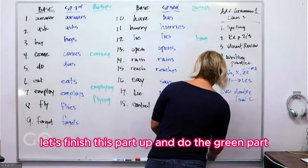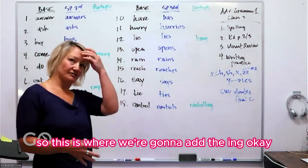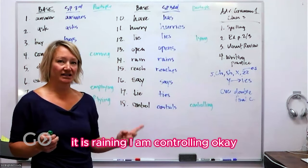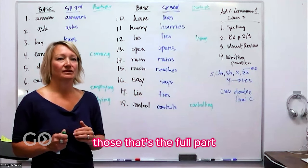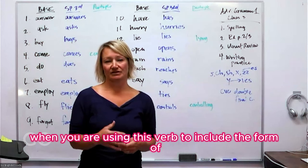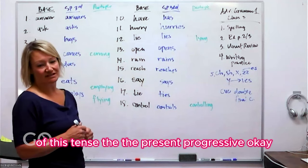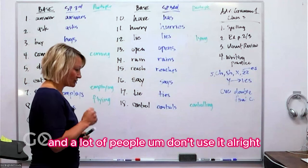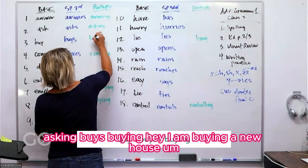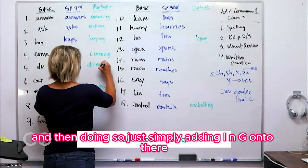Now let's finish with the green marker and do the participle — the I-N-G form. Remember, the full verb includes the form of 'to be': 'is coming,' 'it is raining,' 'I am controlling.' That's why this is just the participle. Don't forget to include the form of 'to be' when using this tense — the present progressive — it's a critical part and a lot of people omit it. So: 'answer' → 'answering,' 'ask' → 'asking,' 'buy' → 'buying.' 'Do' and 'does' → 'doing,' just adding I-N-G.